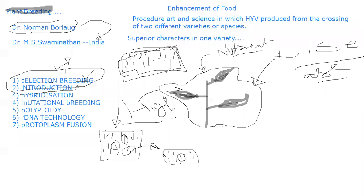Polyploidy means the ploidy increases inside the plant; between different cells or species, genomes are mixed. Recombinant DNA technology is an important method — we can introduce recombinant DNA into a plant for genetic manipulation, producing genetically modified plants such as BT cotton, into which the BT gene has been introduced.